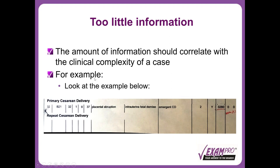Here is an example of a case with too little information. The amount of information on the case list should correlate with the complexity of the case. This is a one-liner — only about seven words including the abbreviation CD — for a 37-week gestation that ended in an IUFD with a placental abruption. There is probably more information that could be listed, and it would be important to do that so the examiner is led to ask about information you've presented rather than searching their mind for something about placental abruption you weren't prepared for.